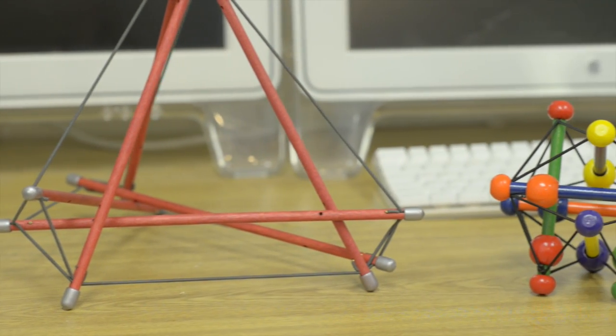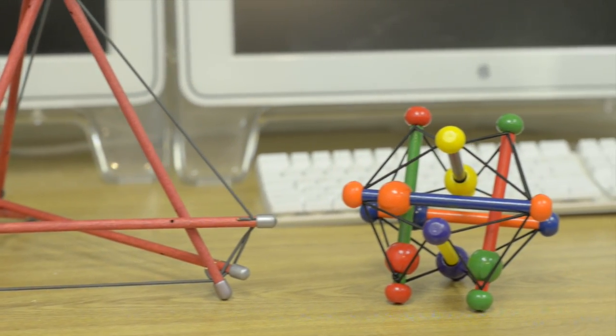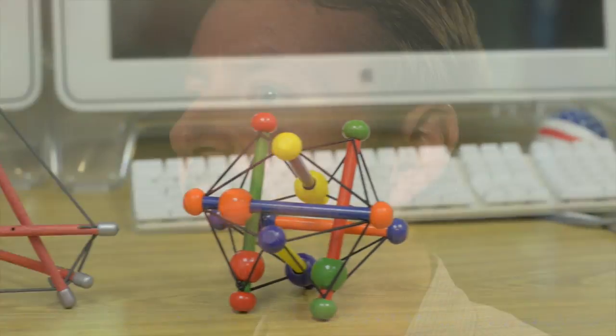Tensegrity structures in robots are very interesting. They're structures that are entirely composed of compression elements and tension elements, like cables and rods, and the cables never touch each other and the rods never touch each other.